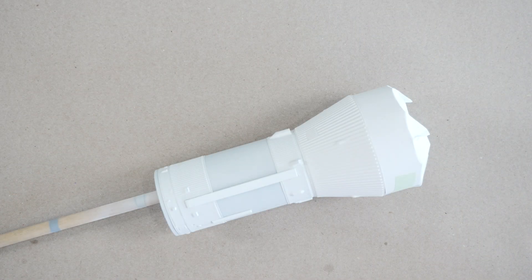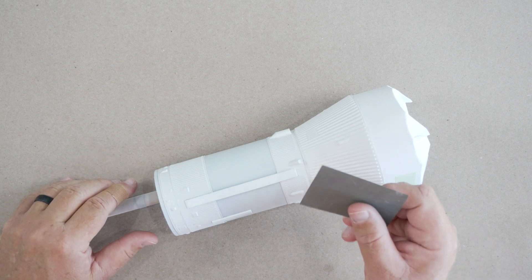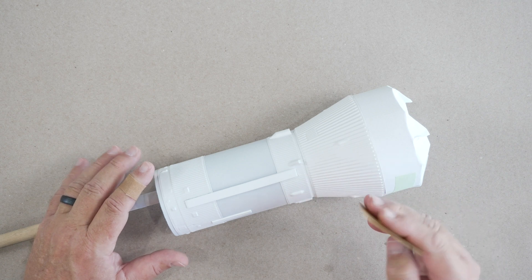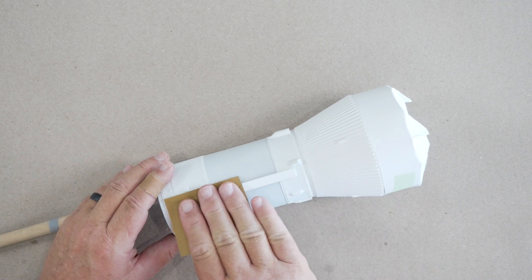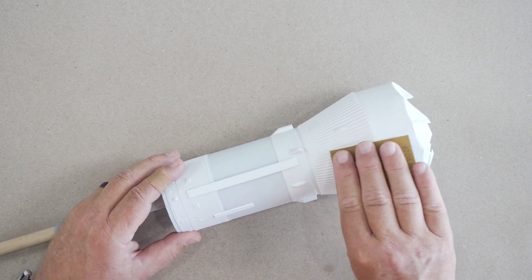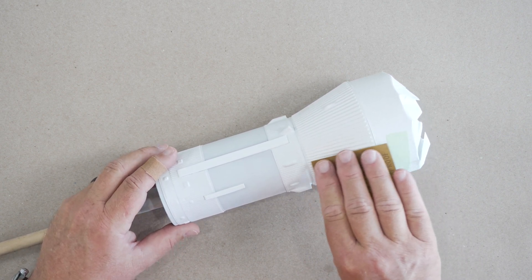Our primer has had the opportunity to cure overnight. So we're going to sand it down lightly with some 1200 grit sandpaper. We don't need to go nuts here. It's already very smooth. Just a few passes over everything with the paper should be more than adequate.